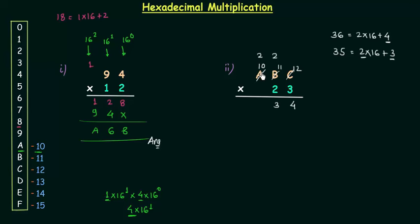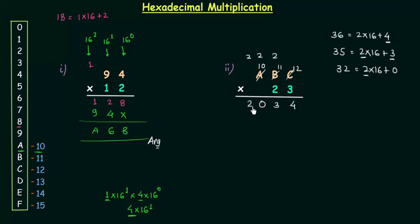3 multiplied by 10 is 30, and we have a carry of 2, so 30 plus 2 is 32. We break that as 2 multiplied by 16 plus 0. So 0 will come here and 2 will go as carry, and finally we have 2, 0, 3, 4 as the result of multiplying A, B, C by 3.